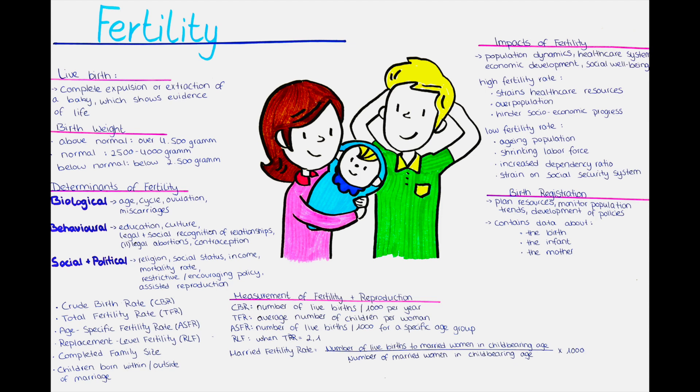Moreover, fertility rates can vary significantly between countries, particularly in relation to economic development. Poorer countries tend to have higher fertility rates, often due to factors such as limited access to contraception, higher infant mortality rates, and a lack of comprehensive reproductive healthcare services.